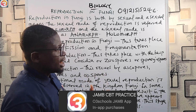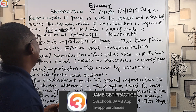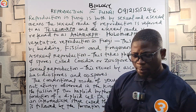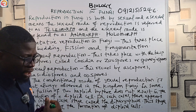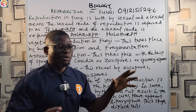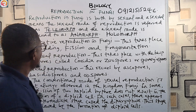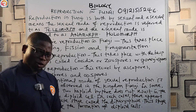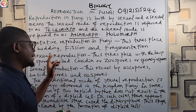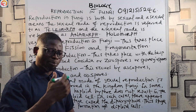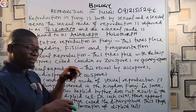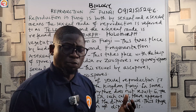Now let us continue. Reproduction in fungi is both sexual and asexual. The sexual mode is called the teleomorph, the asexual mode is called the anamorph, and together they are called the holomorph. Vegetative reproduction in fungi takes place by budding — a new organism is formed from the bud of an existing organism — and also by fission.